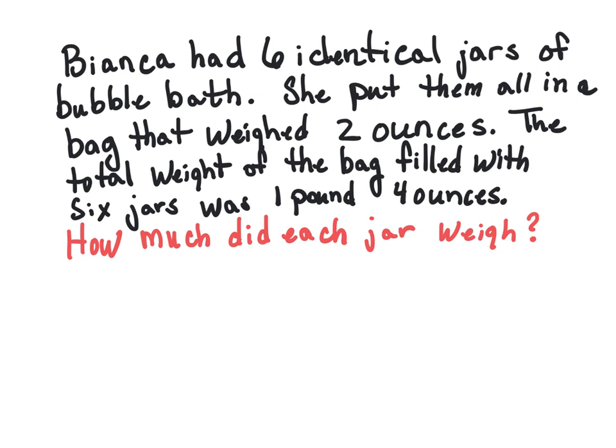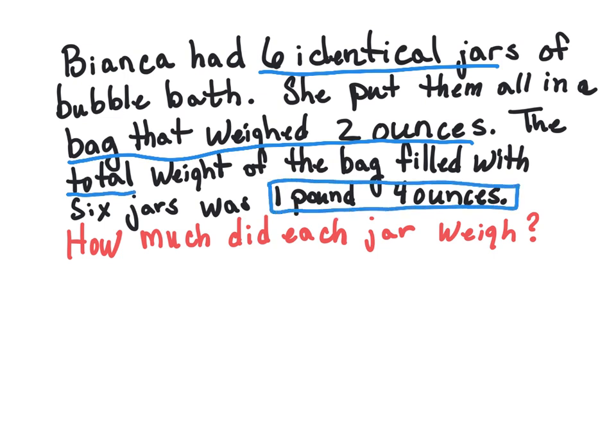All right. Our last example tonight with weight. Bianca had six identical jars of bubble bath. She put them all in a bag that weighed 2 ounces. The total weight of the bag filled with six jars was 1 pound and 4 ounces. How much did each jar weigh? All right. All right. So what we're going to do is we're going to need to have six. She had six identical jars.